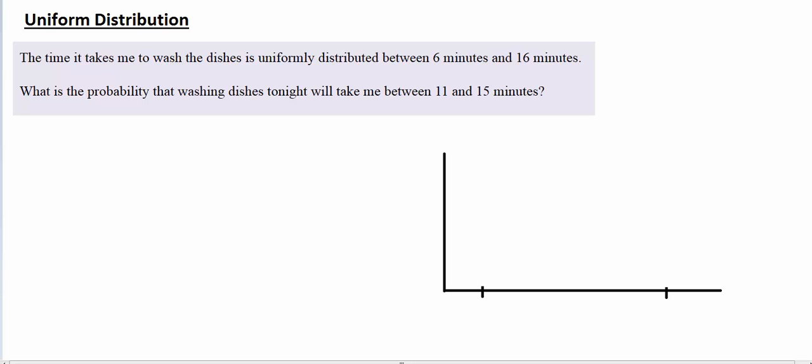You couldn't have 2.753 successes or 5.372 successes. Here though, if it took you 12.5 minutes to wash the dishes, that would be a success, or if it took you 13.45732 minutes, that would be a success. There's an infinite number of time slots that could be counted as a success for washing dishes between 11 and 15 minutes.